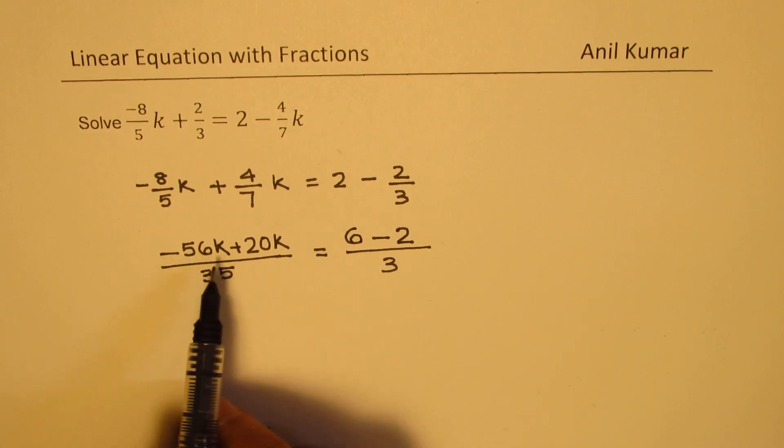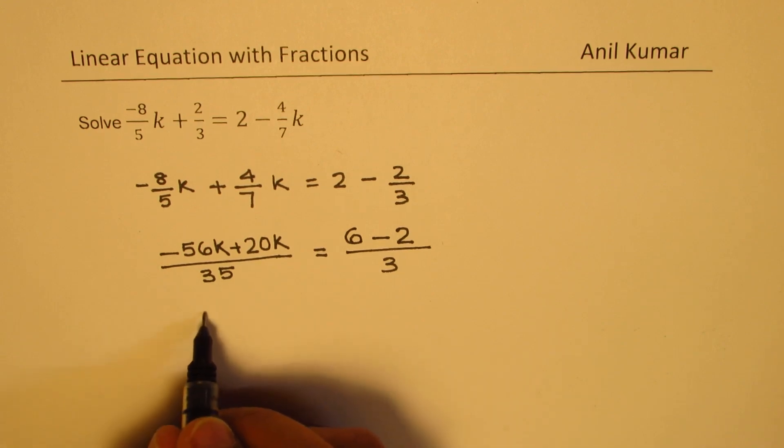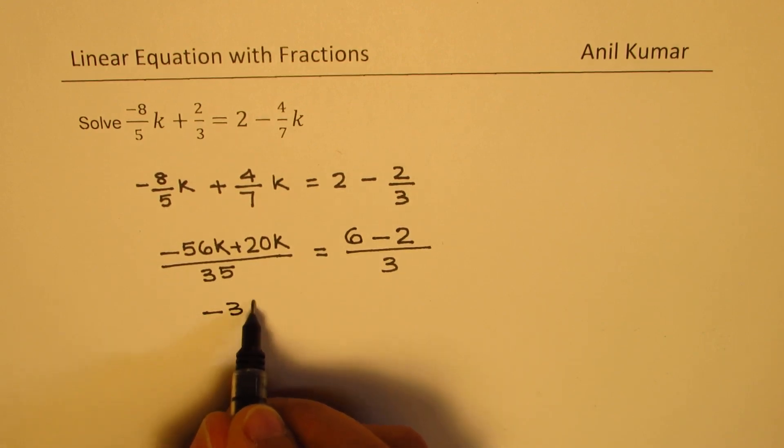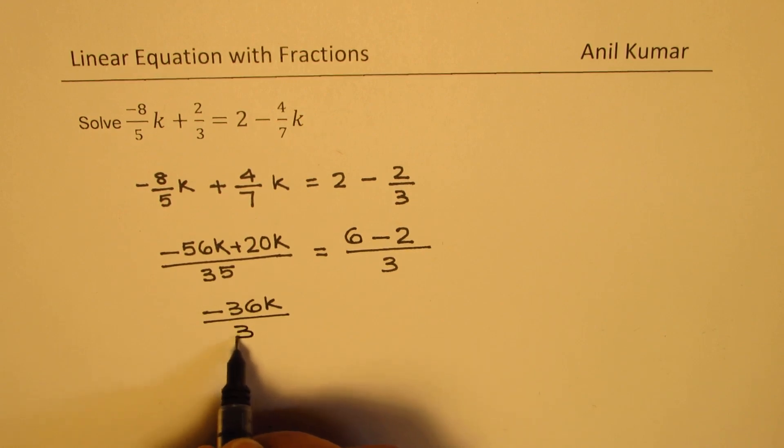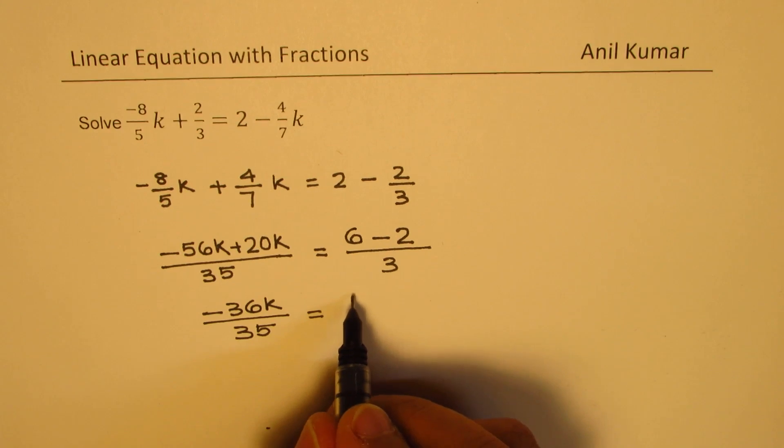Now in the numerator, minus 56 plus 20 will give us minus 36. So we have minus 36k divided by 35. On the right side 6 minus 2 is 4. So we get 4 over 3.